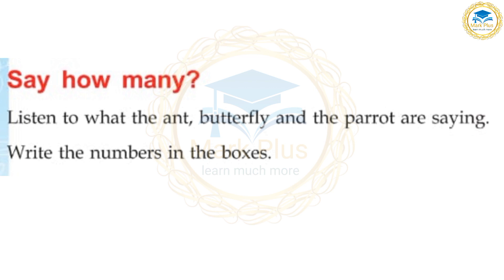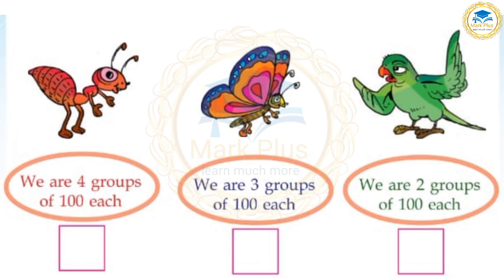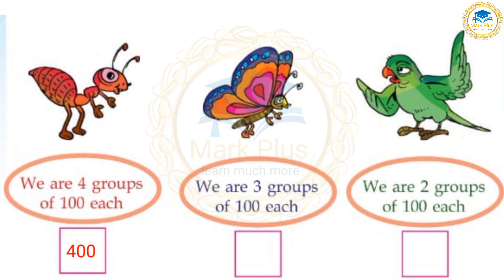Write the numbers in the boxes. What are you? 4 hundred. Next butterfly: we are 3 groups of 100. Here is 3 groups of 100. Here is 2 groups of 100. Here is 2 groups of 200.